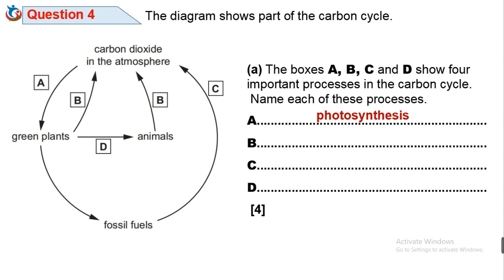B is the process by which plants and animals produce and release carbon dioxide to the atmosphere. This process is called respiration. Through respiration, carbon dioxide is produced and released to the atmosphere.